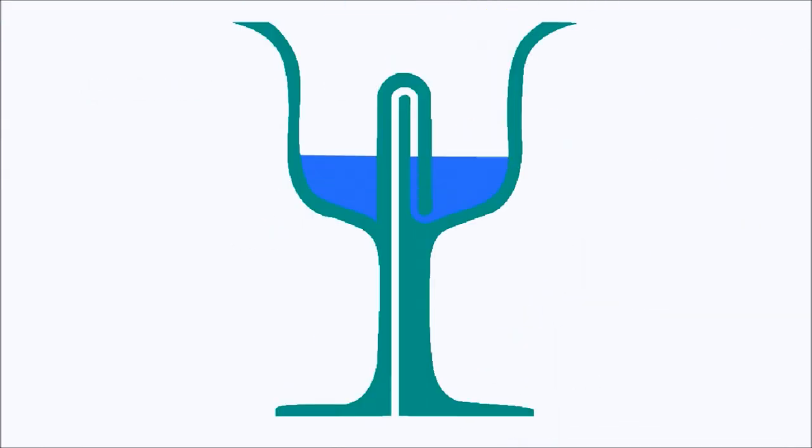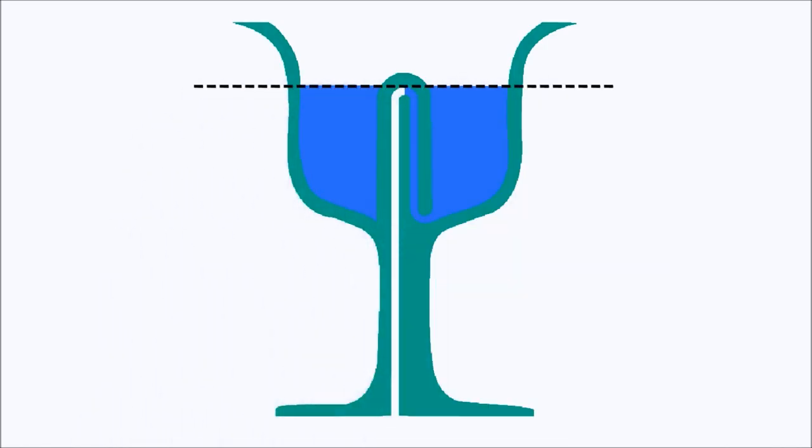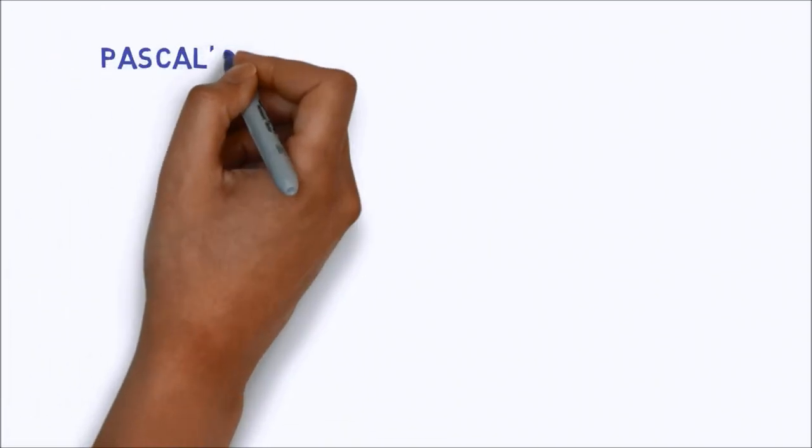When the cup is filled, liquid rises through the second pipe up to the chamber at the top of the central column, following Pascal's principle of communicating vessels.